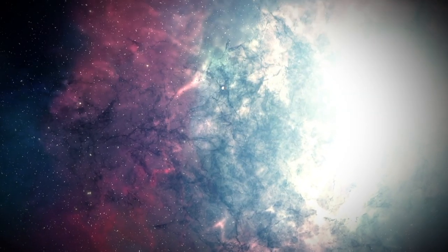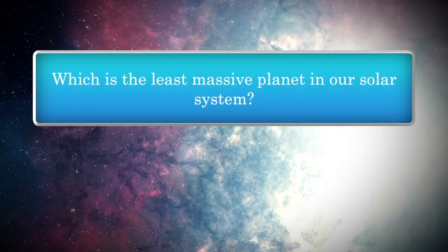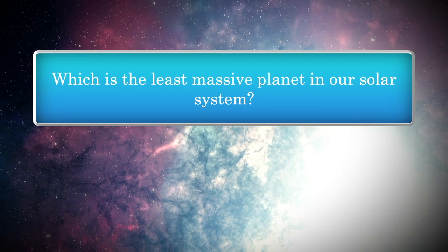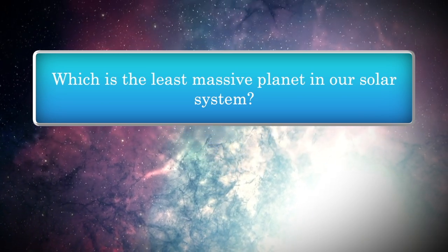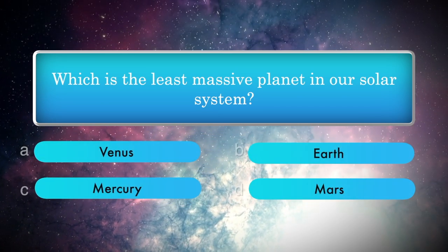Which is the least massive planet in our solar system? Options: Venus, Earth, Mercury, Mars.